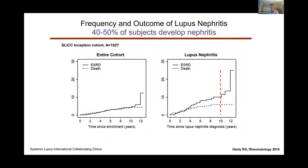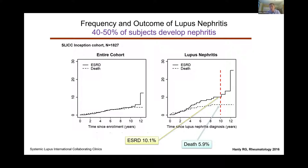I found this pretty cool in my recent reading. Moving on to lupus nephritis: we're aware that lupus nephritis occurs commonly in lupus — something like 40 to 50 percent of subjects develop it. In the SLIC cohort, a group of specialized lupus clinics around the world, even with expert care, end-stage renal disease is still common — about 10% at 10 years — and there's also a high mortality of around 6% at 10 years. So clearly, even with the best care, we still have a long way to go.